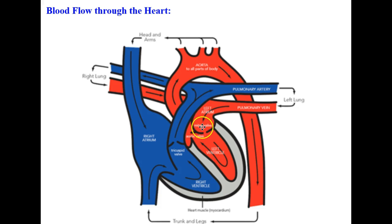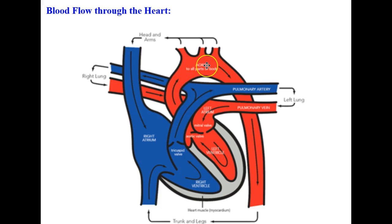The blood then passes through the mitral valve into the left ventricle, where the heart contracts and pushes the blood through the aortic valve into the aorta and to all parts of the body. The vessels up here carry the oxygenated blood to the head and arms, while this vessel continues down and carries blood to the trunk and legs.